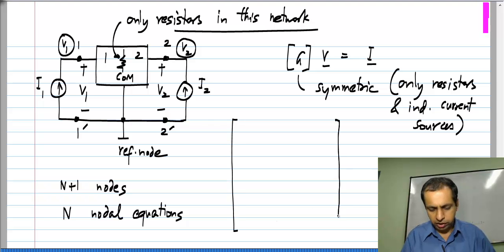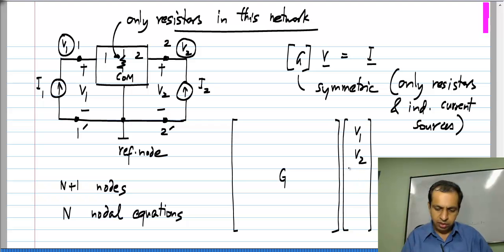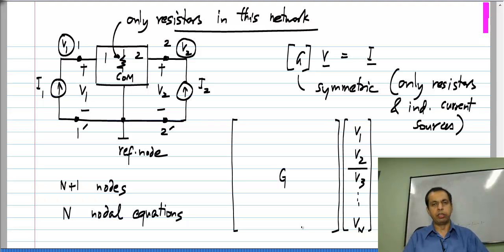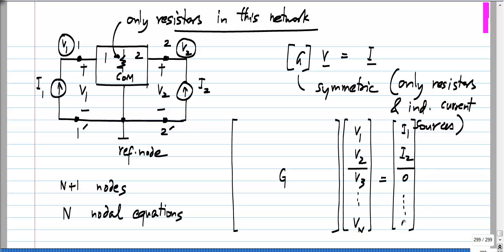Now let me write this in expanded form. I have my G matrix, and the voltage vector consists of V1, V2 — corresponding to the two port voltages — and then V3 through Vn. Remember this is an n+1 node circuit, so there are n node voltages and n independent KCL equations. This equals the source vector, where we inject I1 into node 1 and I2 into node 2. The rest of the entries in the source vector are zero because there are no other independent sources in the circuit.